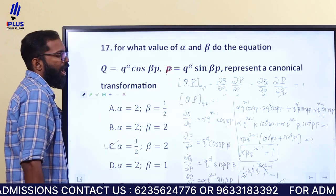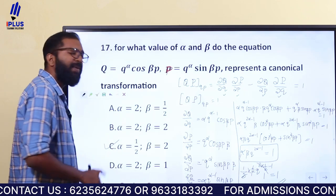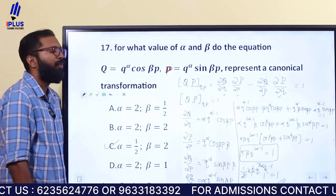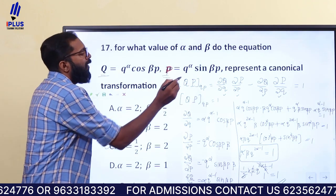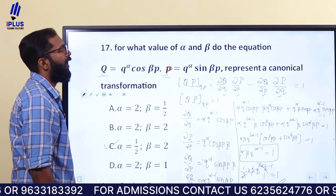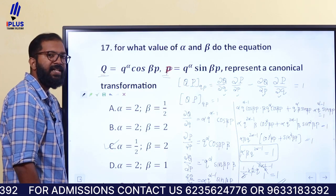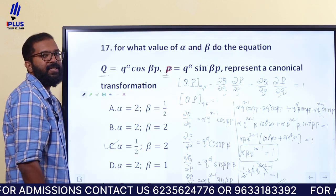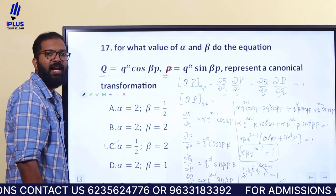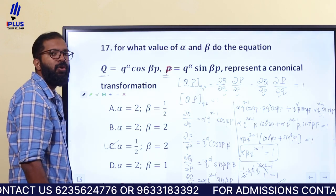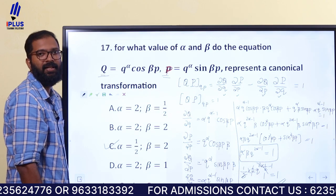The canonical condition is satisfied. If alpha times beta is equal to 1, and 2 alpha minus 1 equals 0, meaning alpha equals 1/2, then the transformation is canonical. The Poisson brackets {Q, P} commute — they are canonical.